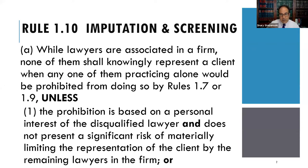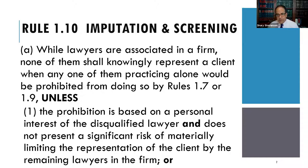So let's talk about what this means. Section (a)(1) talks about a personal interest of the disqualified lawyer. The classic scenario: someone comes to your firm as a prospective client and it's your ex — the ex you had hoped to never see again, the one you thought about getting a restraining order against. There's no way you want to be this person's lawyer, and frankly you really shouldn't be involved at all. Under 1.7, we would call this a material limitation.